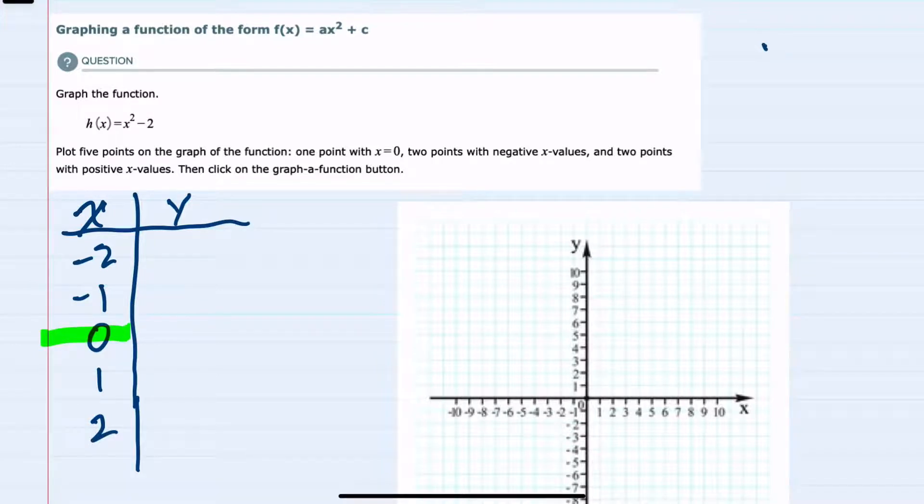So h of 0, which would be our y value, we would replace the x with 0 and have 0 squared minus 2. Since 0 squared is 0, this would be 0 minus 2, or negative 2. So we found our first coordinate is at 0, negative 2. I'll go ahead and drop that coordinate in our graph and then we can move on to the next value.